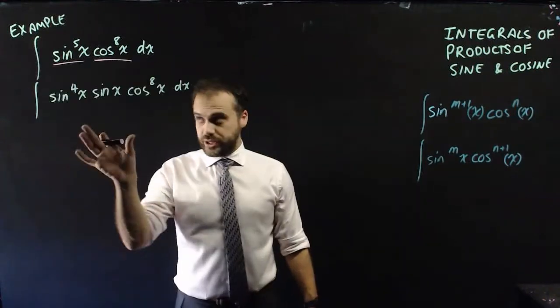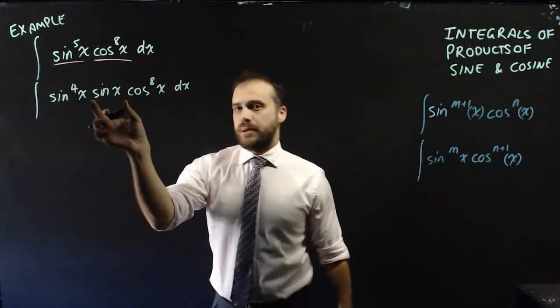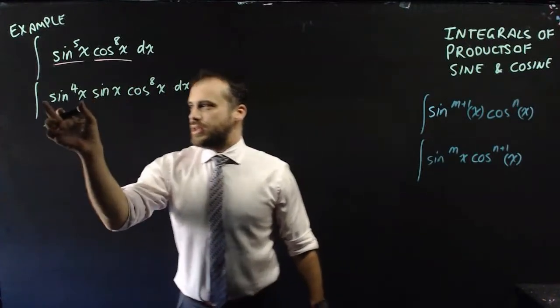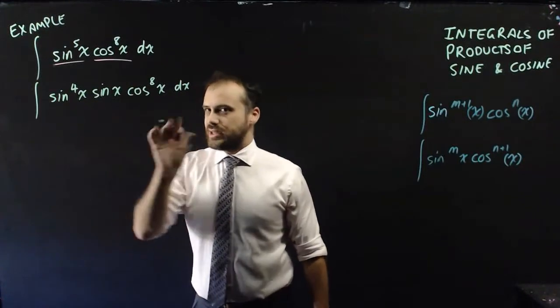Okay, let's get started on this one. The trick is to take your odd power and break it into an even power and a power of 1 here. And then this even power here, you can rewrite this in a cool way.